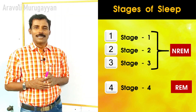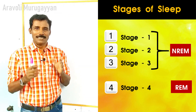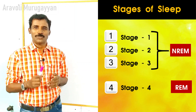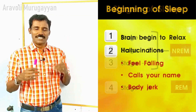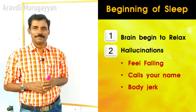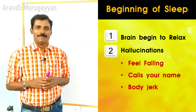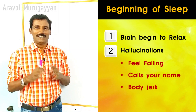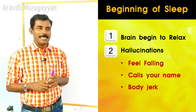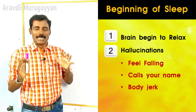First we will see non-random eye movement sleep. Under this there are three stages: Stage 1, Stage 2, and Stage 3. But before Stage 1 there is one preliminary stage. For example, if a person is going to sleep at 10 o'clock, the first 5 to 10 minutes the body will be getting ready for sleep.